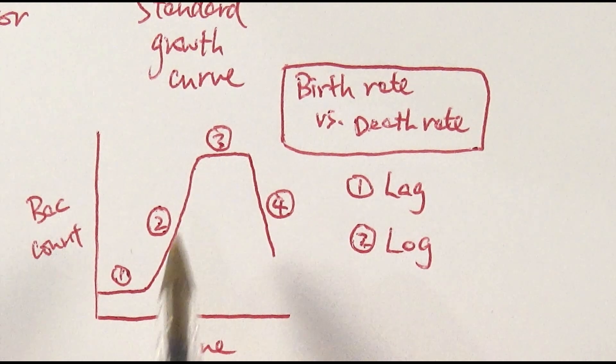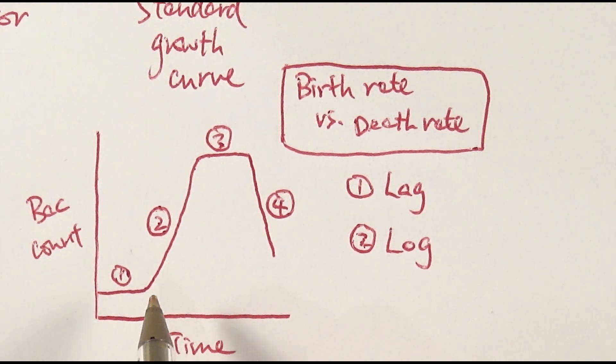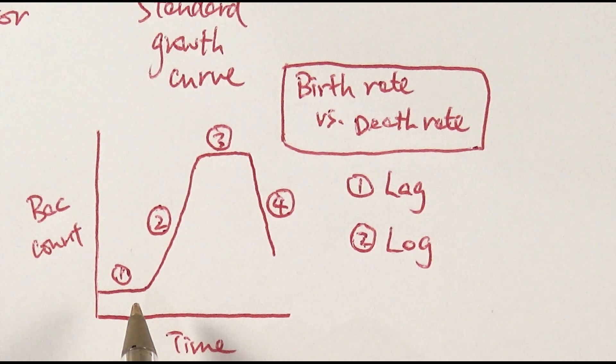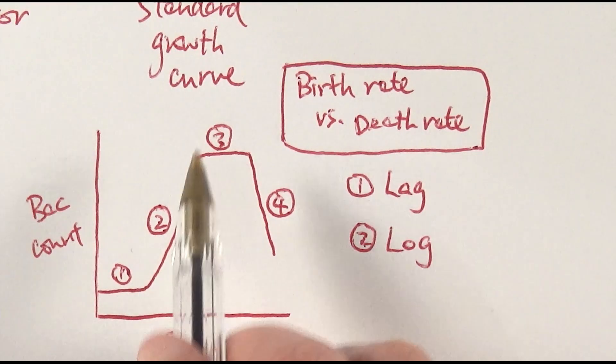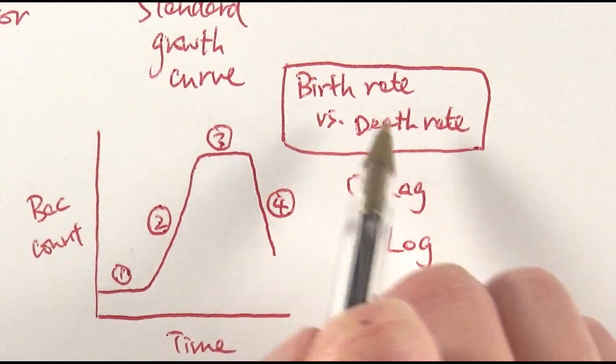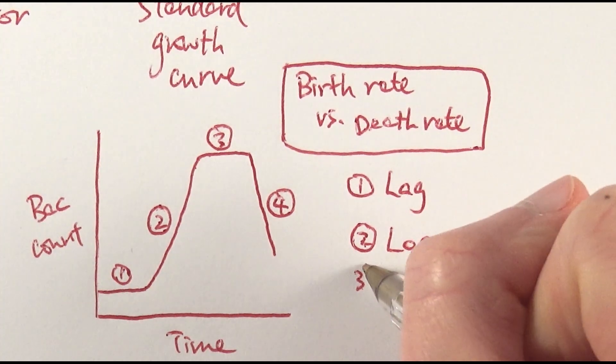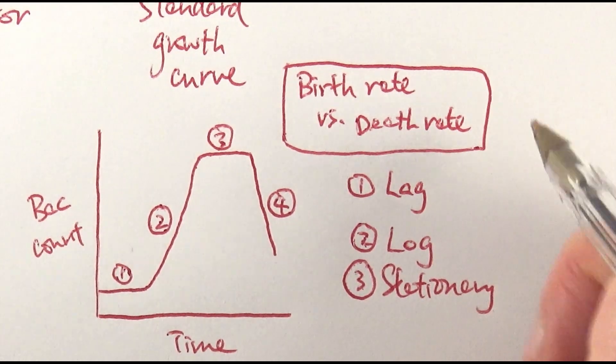The second bit is the log phase or exponential phase where the bacteria is used to the environment now. There is no limiting factors. There's virtually unlimited nutrients and oxygen, lots of spaces for them to grow, no competition whatsoever. So therefore there's a massive growth. Birth rate is much higher than death rate in the log phase.